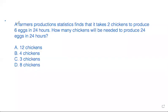This problem says a farmer's production statistics finds that it takes two chickens to produce six eggs in 24 hours. How many chickens will be needed to produce 24 eggs in 24 hours?